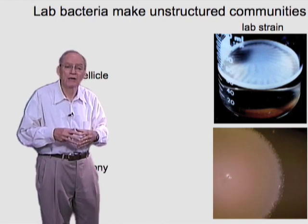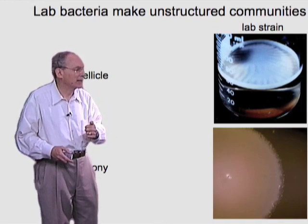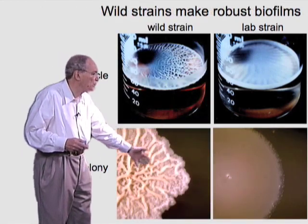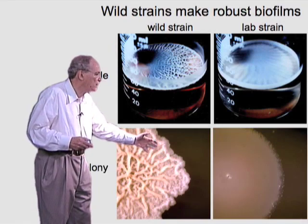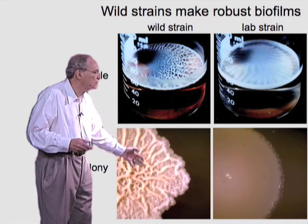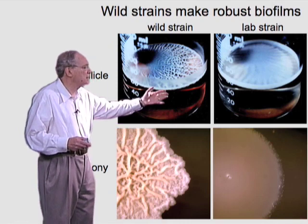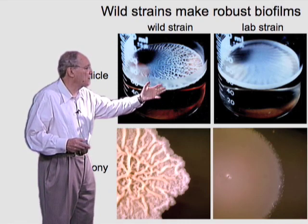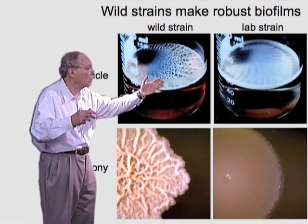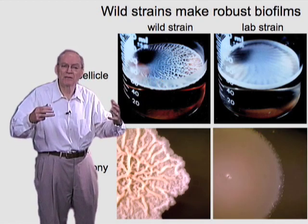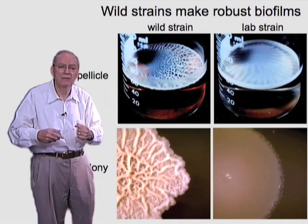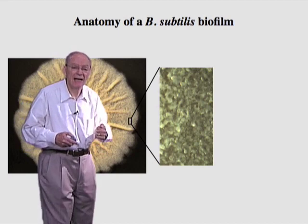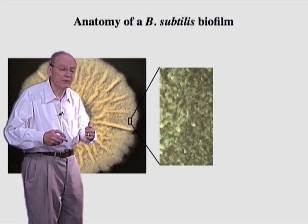But if we go back to a wild strain of the bacterium, we see something dramatically different. In the colony, you can see a rich architecture with thick veins of cells and other kinds of structures. Likewise, at the air-liquid interface, a thick mat of cells known as a pellicle forms that also has a distinctive architecture with all kinds of detailed features.